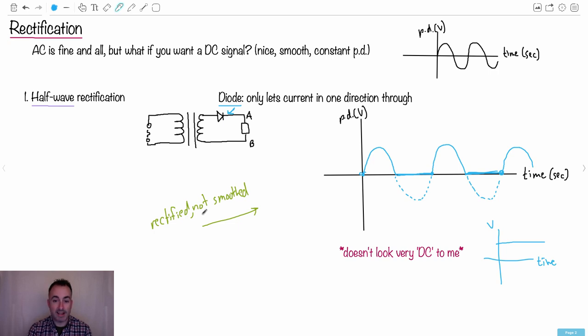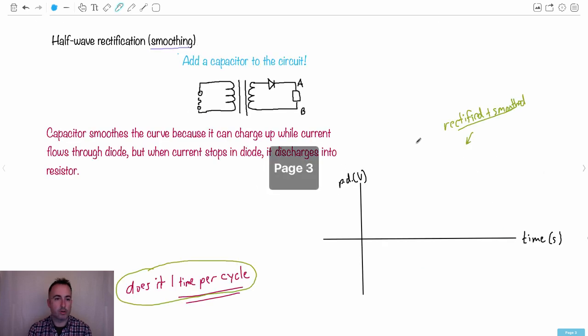But the problem is, it doesn't look very DC to me yet. DC should look like a nice straight line like this. Clearly, this isn't there yet. So that's why I want to point out this is the difference between rectification and smoothing. We've got this thing. It's rectified. It's half-wave rectified. And I'll explain that in a second. And we're going to see a smoothing circuit we can do. So you can have half-wave rectification. Same thing, just like we had, except now we're going to smooth it. And to smooth it, what we do is add a capacitor to the circuit here. So we're going to add a little capacitor, like that.